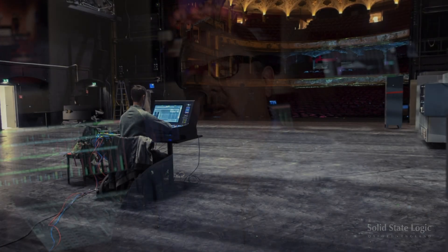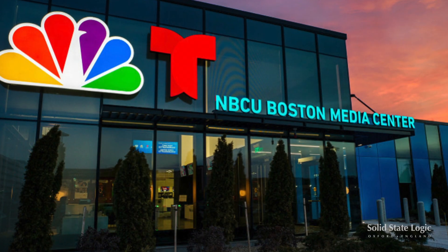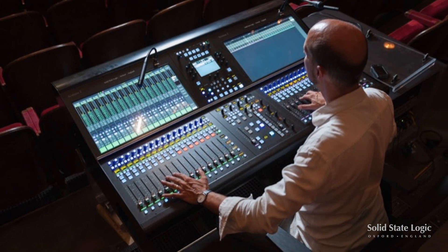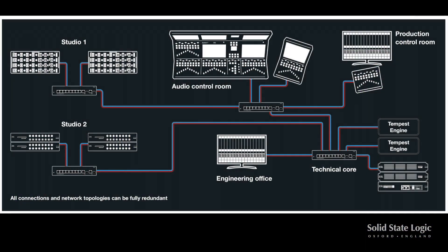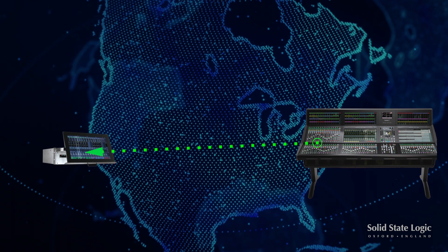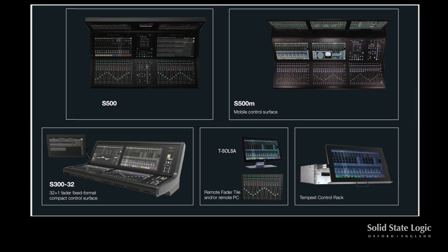I wanted to talk about remote production — the idea that the engineer or the studio is in a completely different location from the event or the production. System-T being a network device allows us to separate our control from our audio processing, so we can locate all the production processing in one place and all the control in another, separated by very large distances — across the country if required. It just needs a dedicated control link between the two. The control can be an S500, S300, a TCR rack, or even T-Salsa. This allows for incredible flexibility and working with multiple teams across multiple locations — it is the future and it works incredibly well.